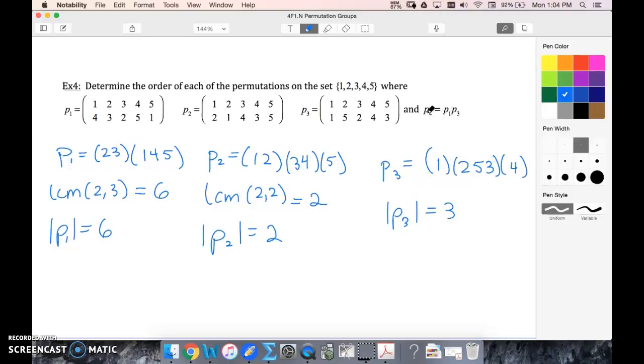Now we need to find p4. p4 is a combination of p1 and p3. So I'm just going to look: 1 to 4, 2 to 2, 3 to 2, 4 to 5, 5 to 3, giving us (1, 4, 5, 3, 2).